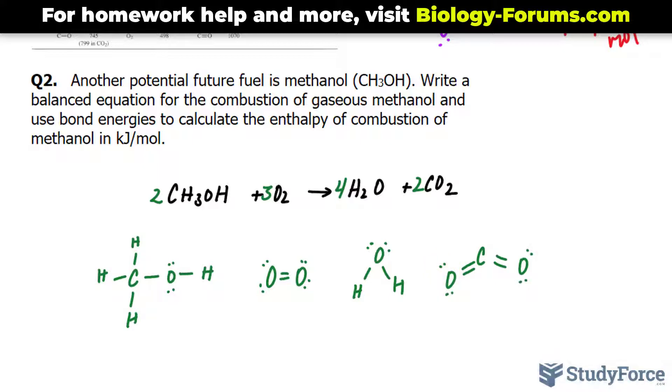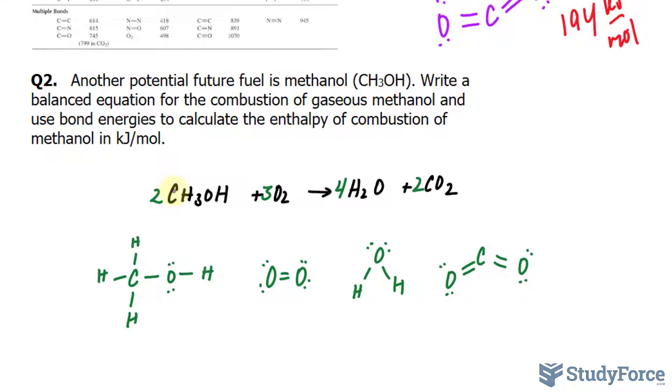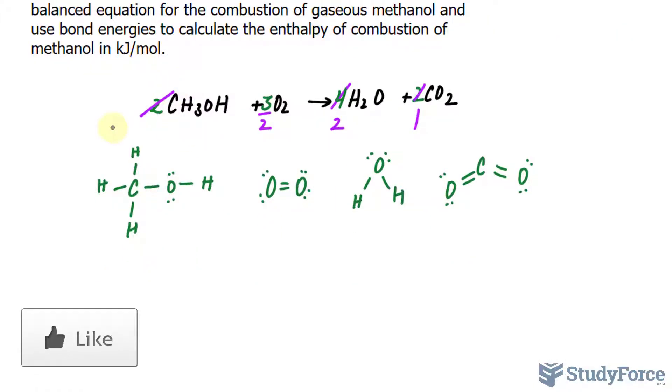Now when it comes to using bond energies to find the enthalpy, we want to use one mole of the fuel. So rather than having this 2, I can divide this whole equation by 2 and use those numbers. So if I divide this by 2, that becomes a 1, that becomes 3 over 2, that becomes 2, and that is 1. Now that we've done that, we have one mole of this molecule. We will find the sum of the bond energies of these two molecules and subtract by the sum of these two bond energies.